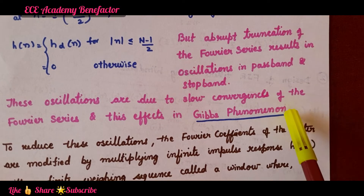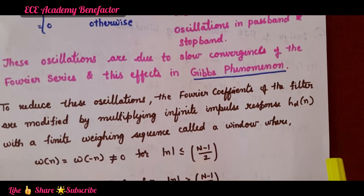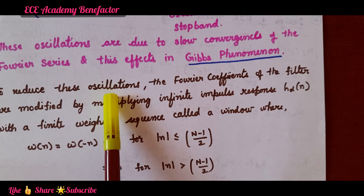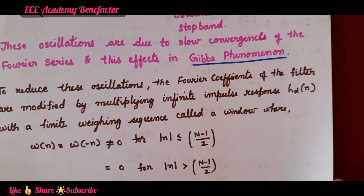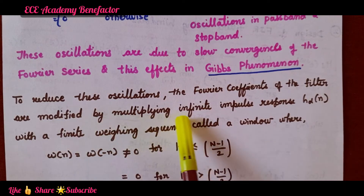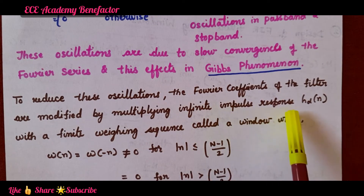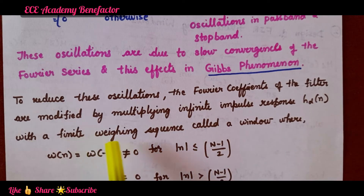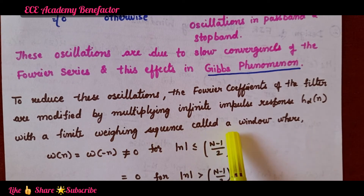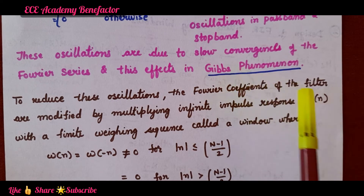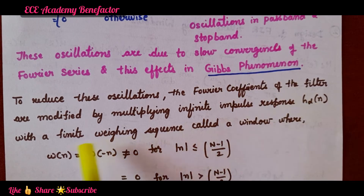To reduce these oscillations, the Fourier coefficients of the filter are modified by multiplying the infinite impulse response H_d(n) with a finite weighing sequence called a window. To avoid Gibbs phenomenon, we have to multiply h_d(n) with a finite weighing sequence known as a window.